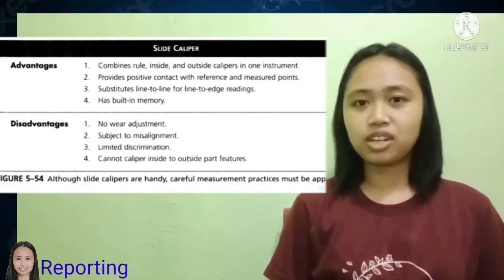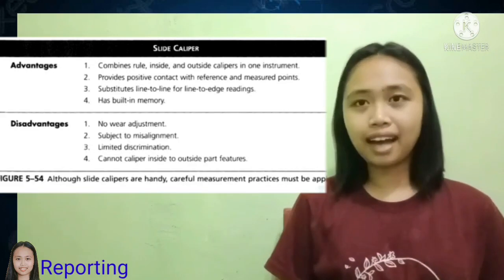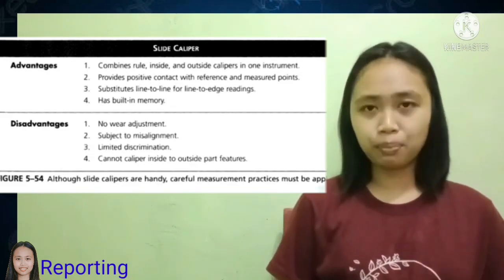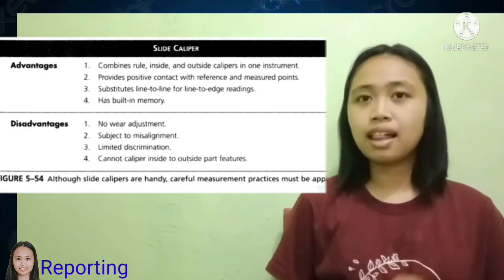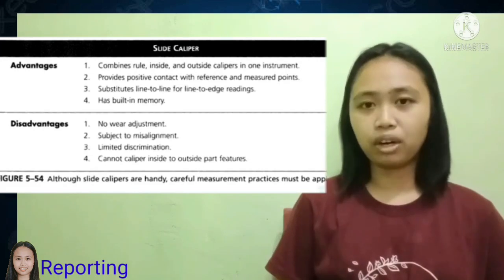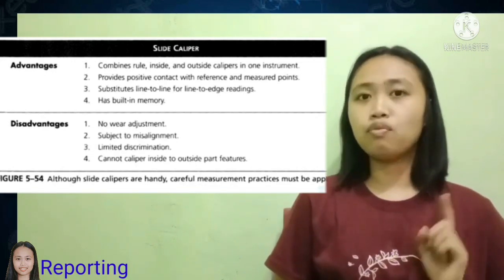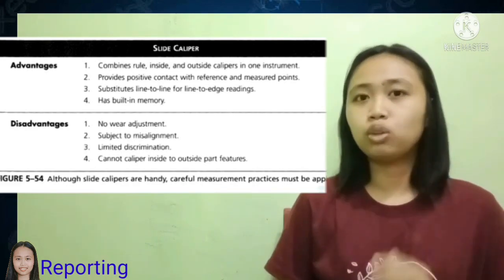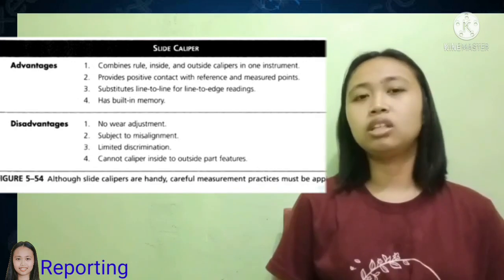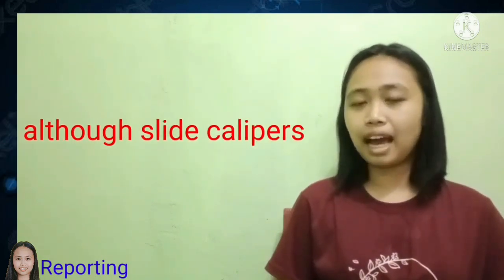Slide caliper advantages and disadvantages. Advantages: first, it combines rule, inside, and outside calipers in one instrument; second, it provides positive contact with reference and measured points; third, it substitutes line-to-line for line-to-edge readings; fourth, it has built-in memory. Disadvantages: first, no zero adjustment; second, subject to misalignment; third, limited discrimination; fourth, cannot caliper inside to outside part features.